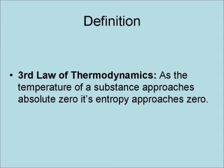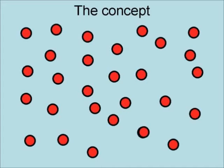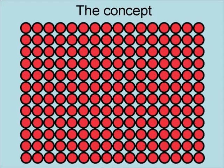The third law of thermodynamics states that as the temperature of a substance approaches absolute zero, its entropy approaches zero. The concept is that because heat is a result of the motion of the molecules in an object, and that this motion causes the molecules to move around and spread out, this causes a condition of high entropy.